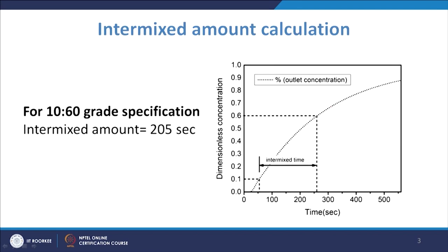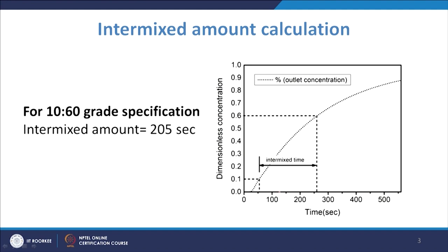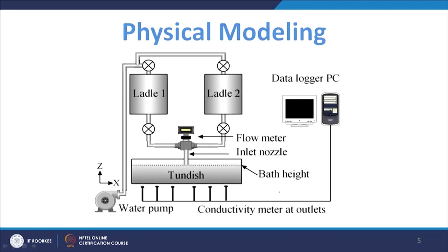You measure the outlet concentration using conductivity meters, and that is how the concentration curve is obtained. At different outlets you will have different curves — at the near outlet it may start earlier and at the far outlet, which is far from the inlet, the tracer may appear a little later. From all the outlets you can measure the intermixed amount and the plant can make decisions on what to do with that intermediate grade steel.